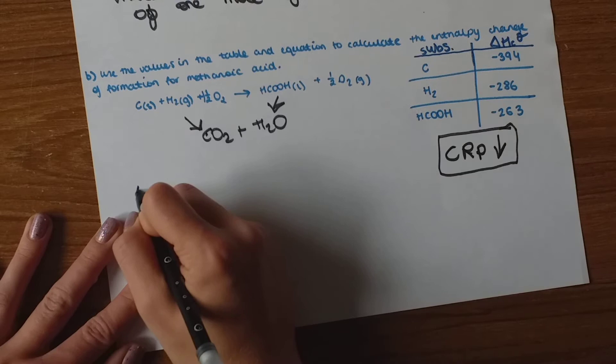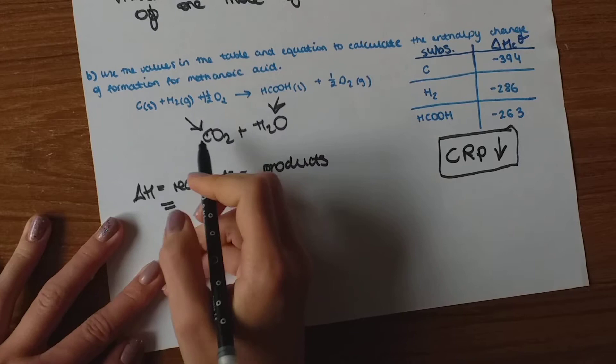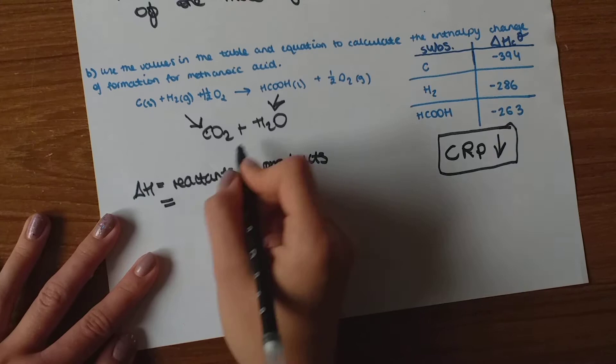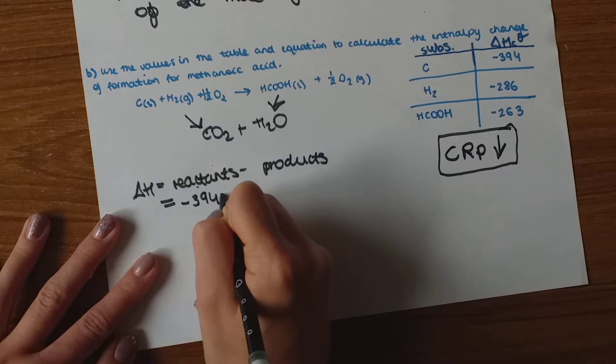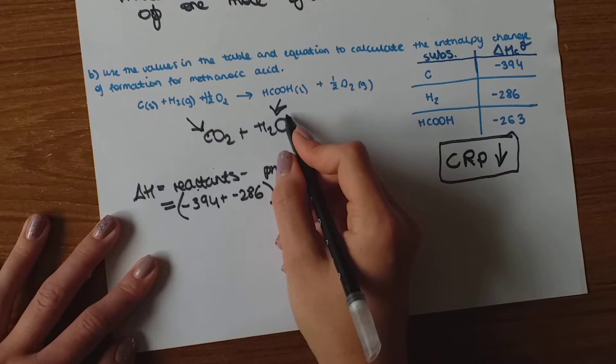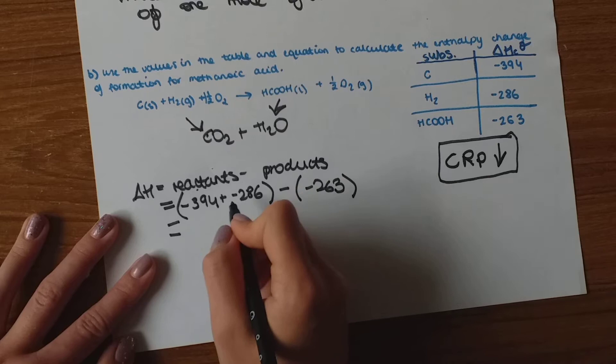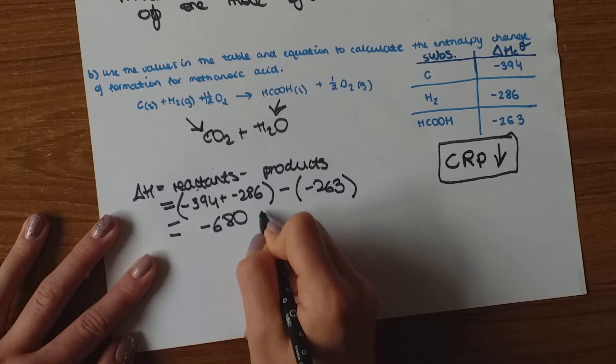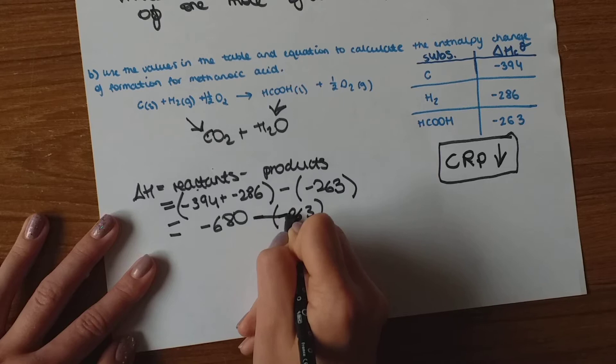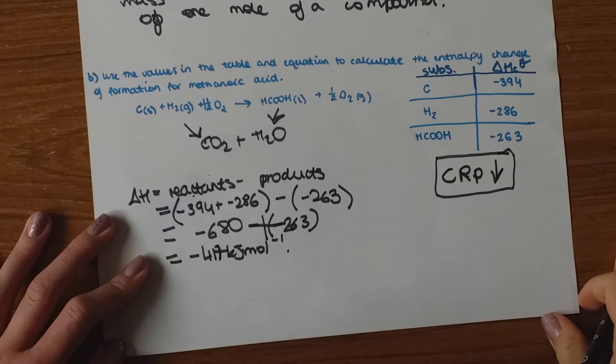So now what we're going to do is just find the enthalpy change, which is reactants minus products. All the reactants is carbon, hydrogen, and oxygen. Oxygen is zero because it's in its standard state. So it's only carbon, minus 394, plus hydrogen, which is minus 286. Then we've got to take away all the products, which is methanoic acid, minus 263, plus water. But it's the standard state, so it's zero. So we're not going to include this. So this bracket is minus 680. Then we take away minus 263. Minus and a minus gives us a big plus. So the final answer is 417 kJ mole minus 1.